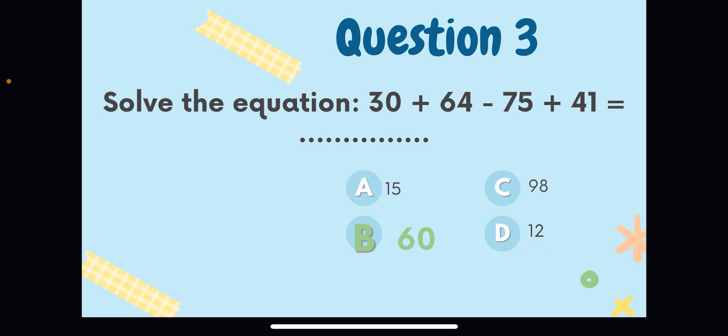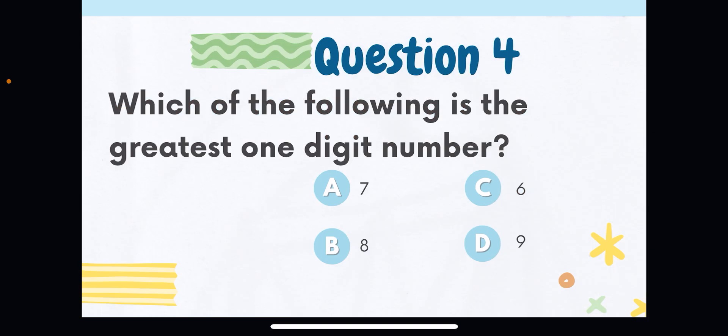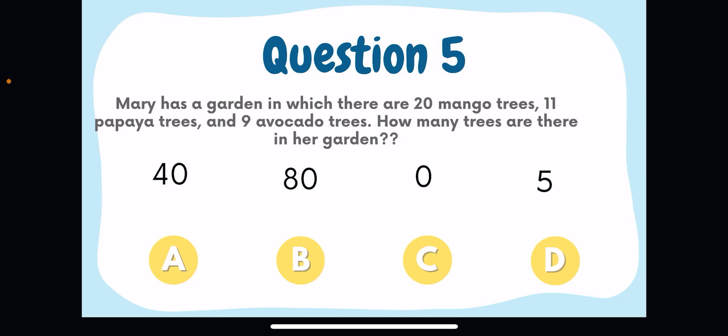Question number four: which of the following is the greatest one-digit number? All four options are one-digit numbers, so check which is the greatest. Nine is the greatest one-digit number, so you need to choose option D.